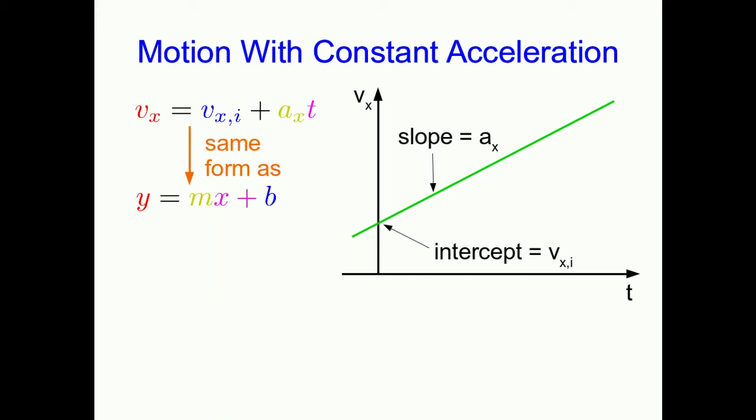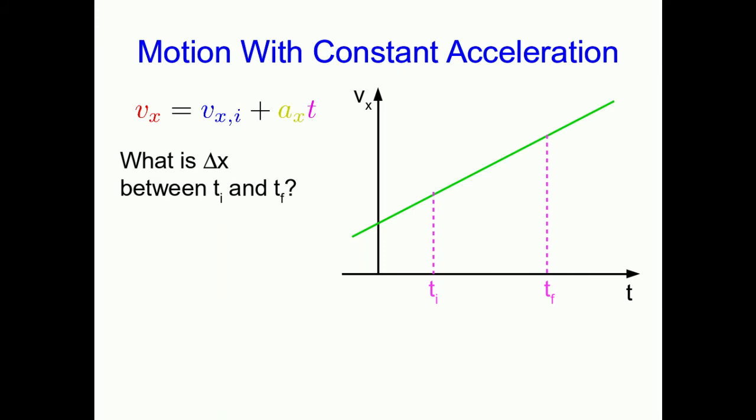But moreover, we can see how we can just read the intercept off of it, and we already knew the slope had to be the acceleration. But now let's do something else with this. What if we want to know delta x, the x component of displacement between some ti and tf?